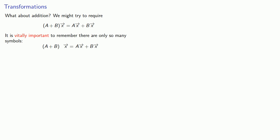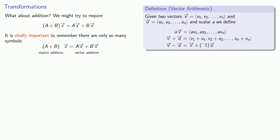So let's consider addition. We might try to require that A plus B, whatever that is, acting on vector X, should be A acting on X plus B acting on X. And it's vitally important to remember there are only so many symbols. In this particular case, on the left-hand side, this plus refers to matrix addition, which we haven't yet defined. While on the right-hand side, the plus refers to vector addition, which we have. And this is useful because it suggests we can define matrix addition in terms of vector addition.